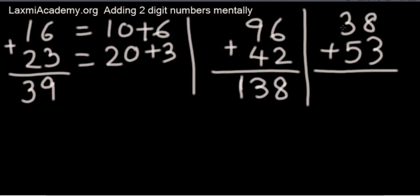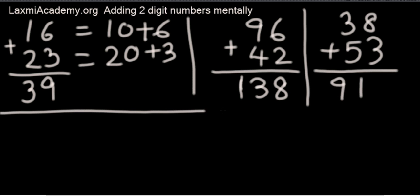Now 30 here, 50. 30 plus 50 is 80, 88, 91. So you're going to do 30, 80, 88, 91. Initially you may have to do like 30 and 50 but once you practice it you can do just 30, 80, 88, 91.